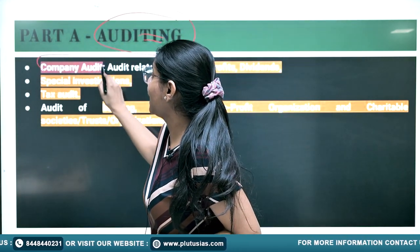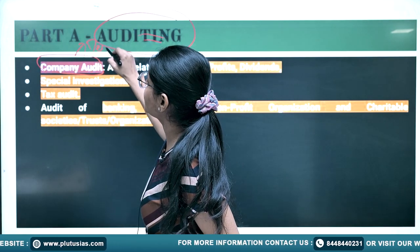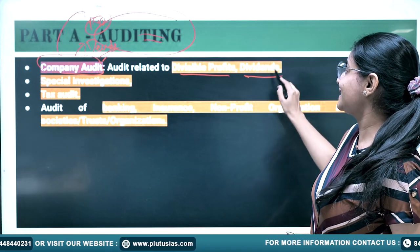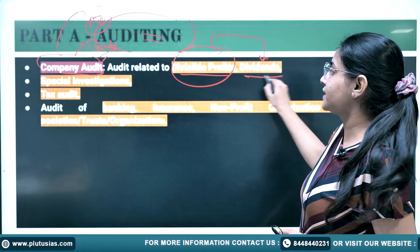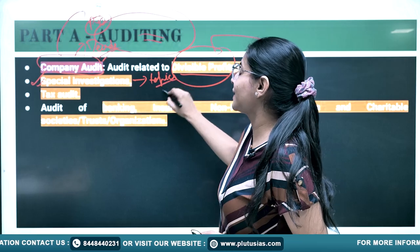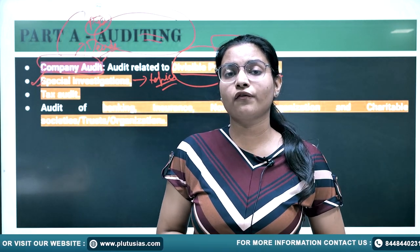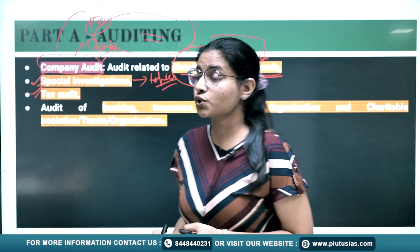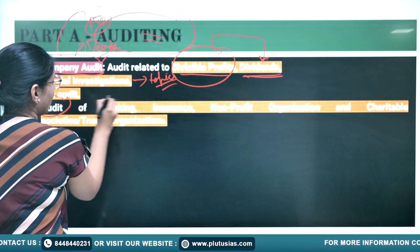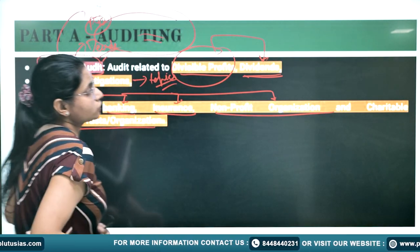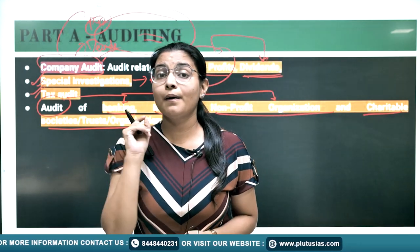The last part of Part A is Auditing. The syllabus covers Company Audit — you need to decide your priority as it is a vast topic, so at least see previous year questions to decide which topics are more significant. Then Divisible Profits and Dividend. Then Special Investigations, which covers different scenarios like investigation for an incoming partner or by a bank. Then Cost Audit. The audit of various organizations includes Banking, Insurance, Non-Profit Organizations, and Charitable Trust Organizations — please look at the micro topics carefully.